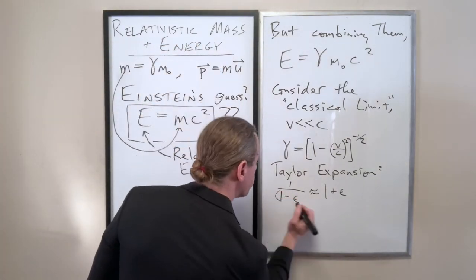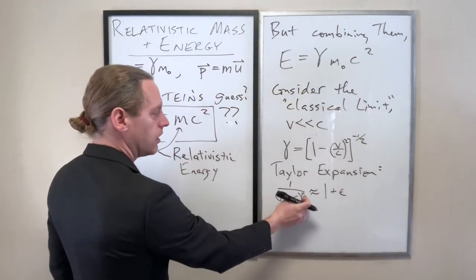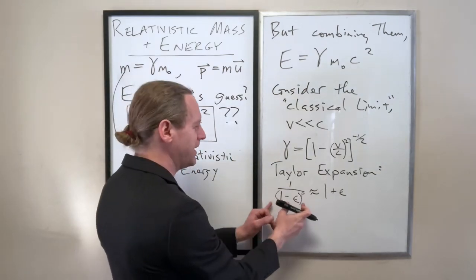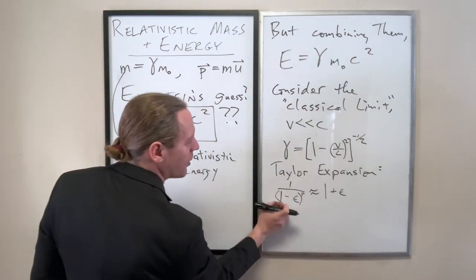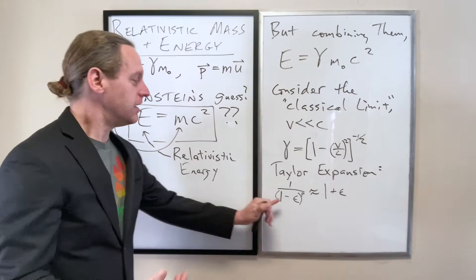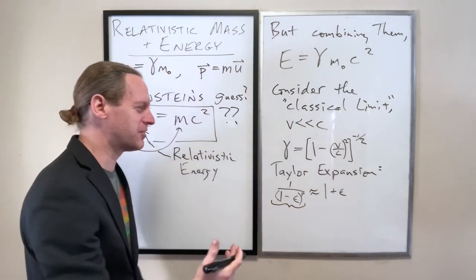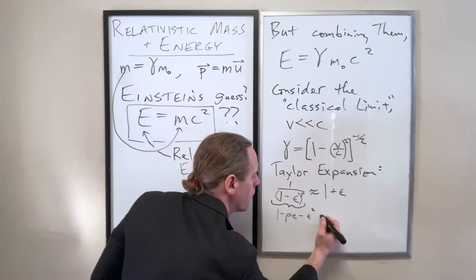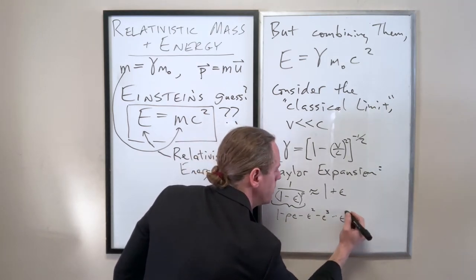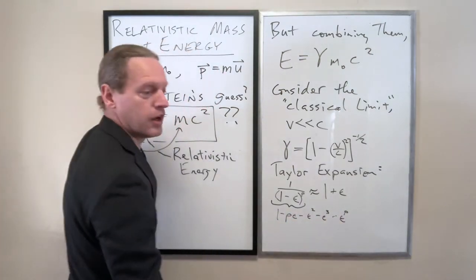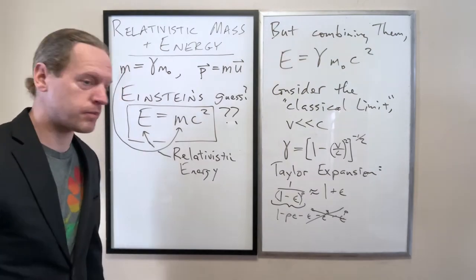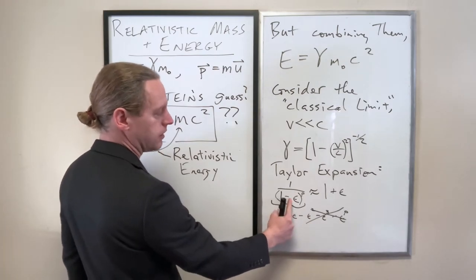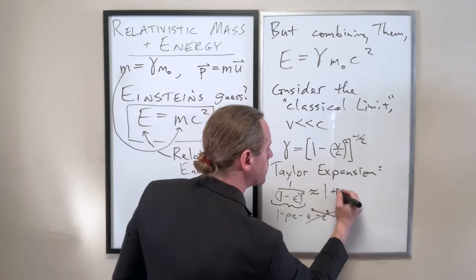Because if you have 1 over 1 minus a small quantity epsilon, that's... And again in the limit where epsilon goes to 0, that's actually equivalent to, or very close to, 1 plus epsilon. Now if you have this to some power P, what you're going to do is binomially expand it using the binomial principle.